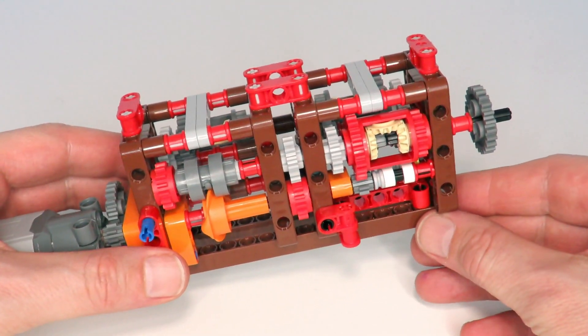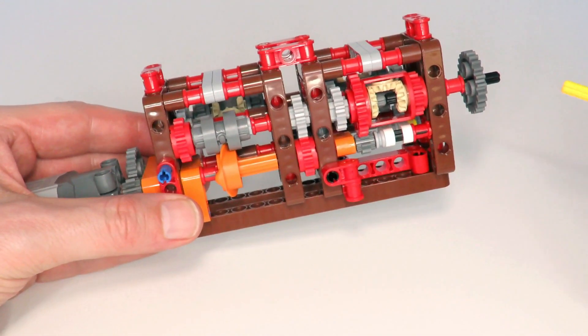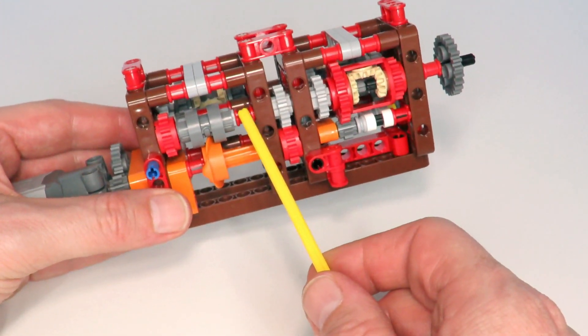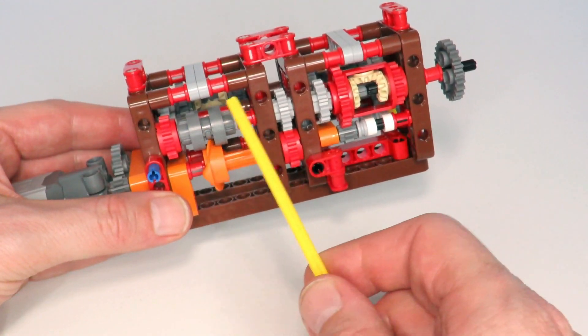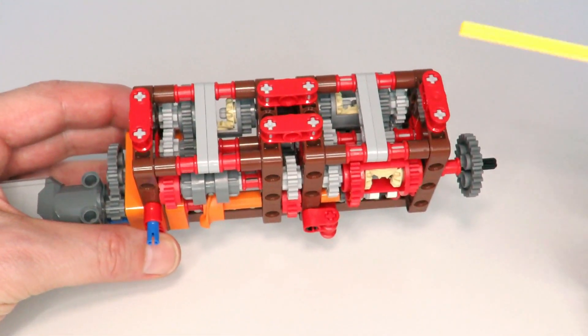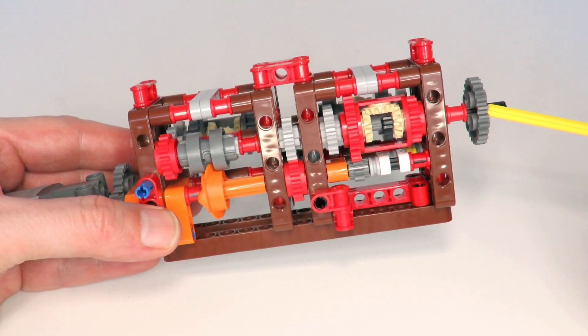So given how well this particular gearbox worked, I thought it would be a simple matter of extending it to having three automatic speeds, something that some of my subscribers suggested anyway. Just a matter of adding an extra gear on this side of the selector, that way we're selecting either between gear one and neutral and gear two, and then adding those through the gearing onto the output differential to create the three different speeds on the output.